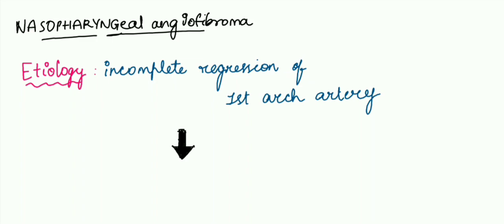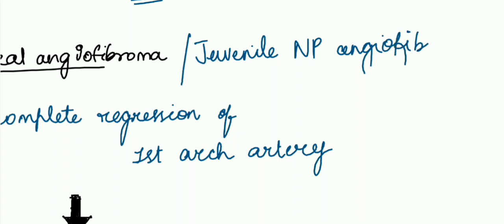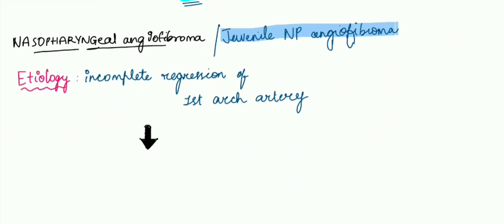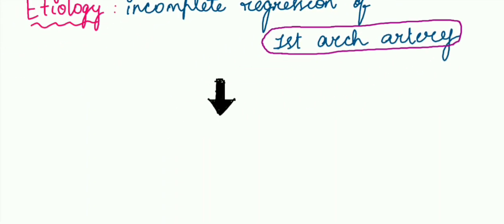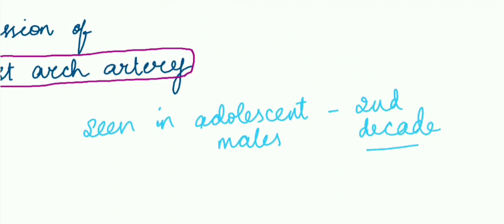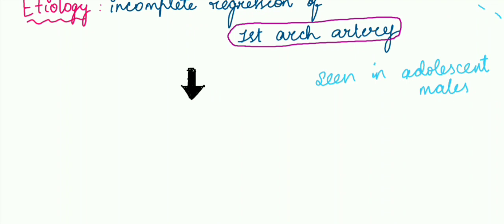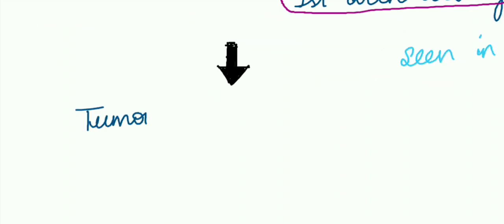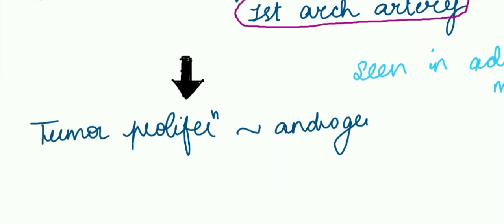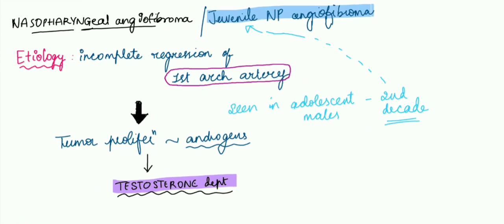Let's talk about nasopharyngeal angiofibroma, which is also called juvenile nasopharyngeal angiofibroma. The exact etiology is unknown; however, it is supposed to occur due to incomplete regression of first arch artery. This is predominantly seen in adolescent males, especially during the second decade, hence the name juvenile nasopharyngeal angiofibroma. The proliferation of this tumor is supposed to be under the regulation of androgens, as in this case testosterone. Hence, this is a testosterone-dependent benign tumor.